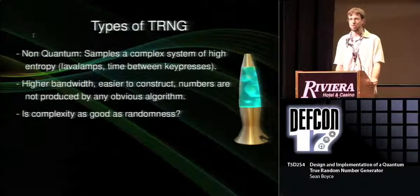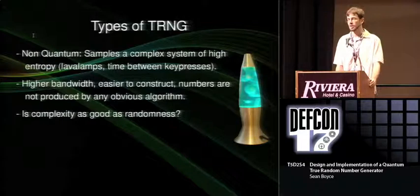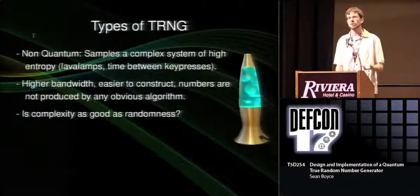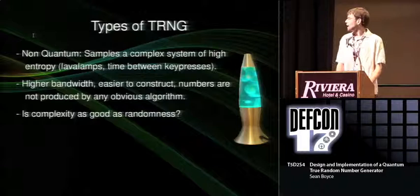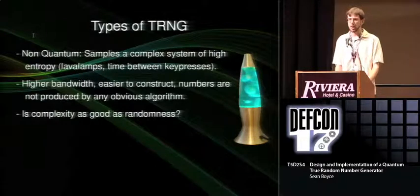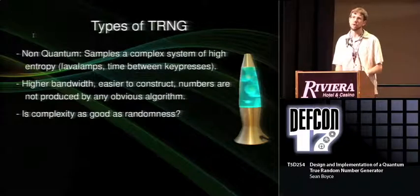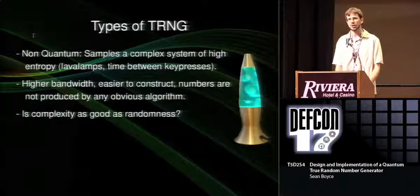Among true random number generators there are two sorts. Non-quantum true random number generators sample a complex and chaotic system — I use chaos and entropy interchangeably — and use that measured entropy to generate random numbers. These are not that hard to design if you think very carefully. For instance, you can use minor differences in user input timing, or sample air pressure or temperature over very small time scales. But fundamentally, you're sampling a system that has many inputs, and you have to ask yourself whether the complexity of the output is as good as random output, because it's very difficult to prove what all of those inputs are, or whether some are defined by an algorithm or biased.